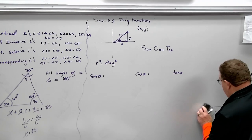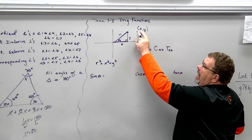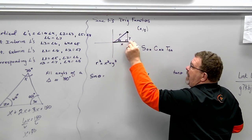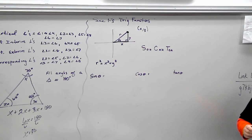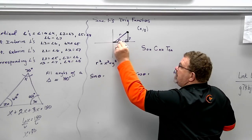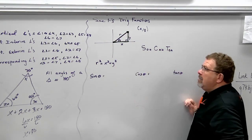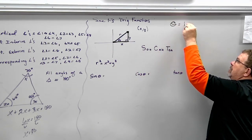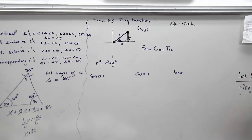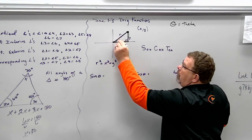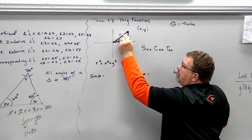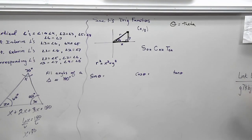If I'm given the point (x, y) and I graph it, the x value is horizontal and y is vertical. Notice I can form a right triangle off of this — any time I know a point, I can form a right triangle. The symbol theta represents angle measure in trig. Theta is always formed between the hypotenuse and the x-axis, always there. Our 90-degree angle is always formed on the x-axis.